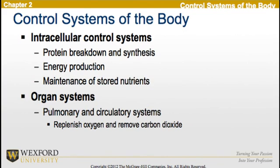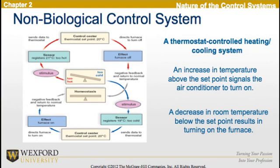Now, if we move on and look at control systems of the body, there are intracellular control systems — this would involve protein breakdown and synthesis, energy production, and maintenance of storage nutrients. We also have organ systems; examples would be the pulmonary and the circulatory systems, involved in replenishing oxygen and the removal of carbon dioxide. There are also examples of non-biological control systems — a very simple one is a thermostat that controls the heating and cooling system. An increase in temperature above the set point signals the air conditioner to turn on, while a decrease in room temperature below the set point results in a turning off of the furnace.